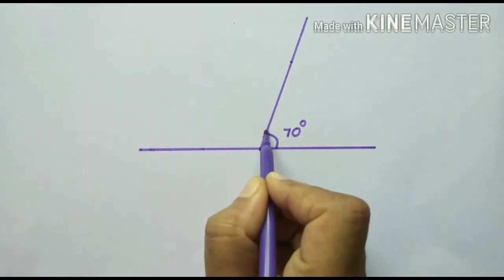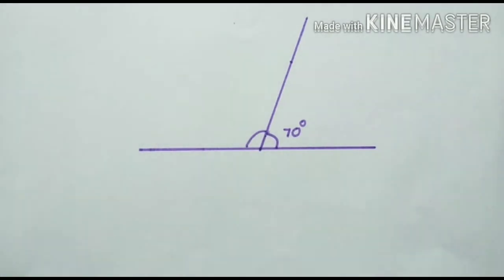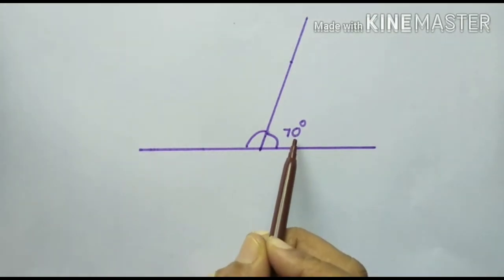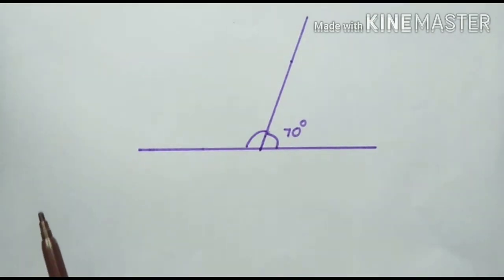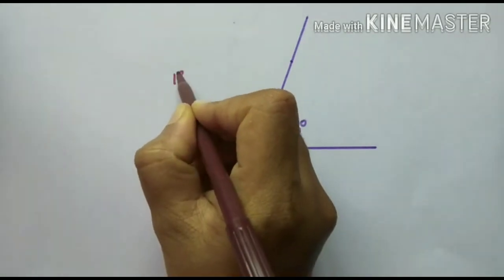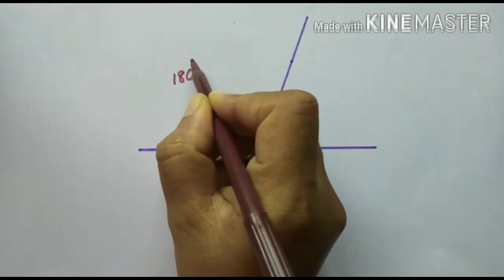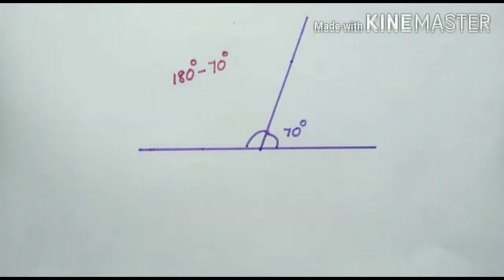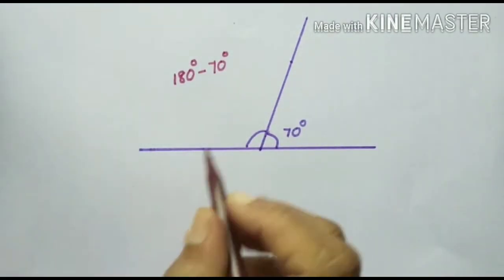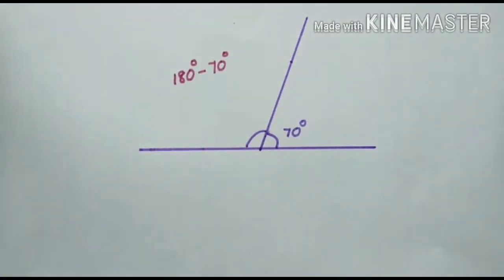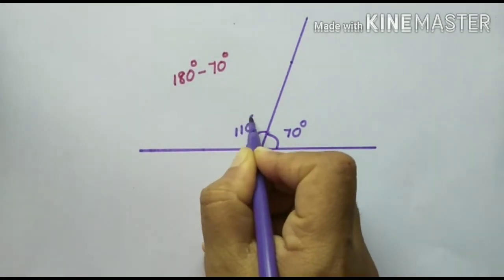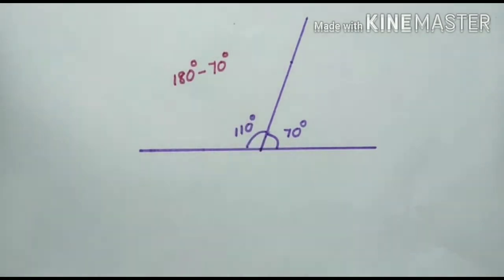So how will we find this angle? We can find it by subtracting 70 degrees from 180 degrees. So 180 degrees minus 70 degrees — the answer is 110 degrees. So we get this unknown angle as 110 degrees.